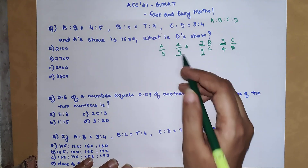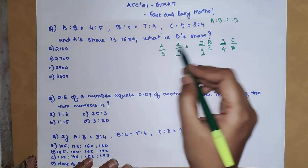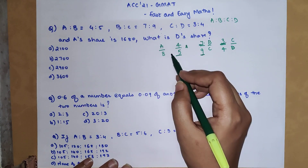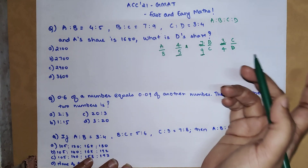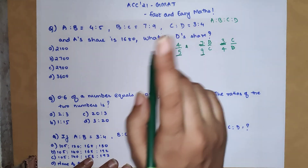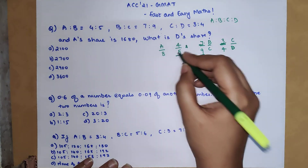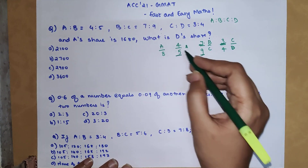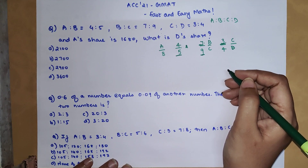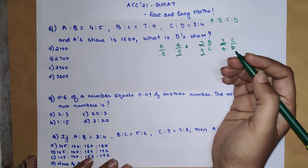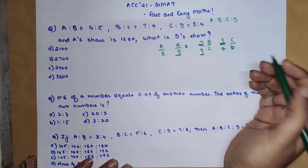The alphabets which are repeated twice — B was repeated twice — so the letter B has to be represented by the same number. How you do that is by taking the LCM between 5 and 7. The LCM of 5 and 7 is 35.